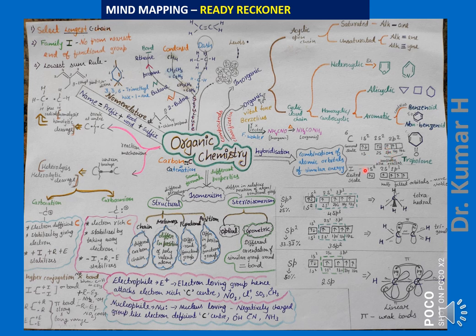In the first excited state, when it absorbs a small amount of energy, the electron from 2s jumps into the 2pz orbital. In the p orbital there are three sub-orbitals: px, py, and pz. The paired electron from 2s moves to the pz orbital, giving 1s and 3p sub-orbitals. So then there will be one unpaired electron in each.